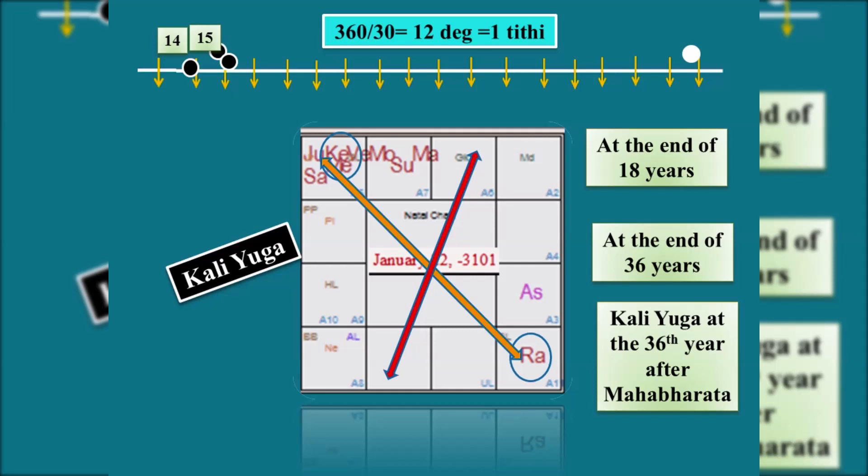Those confusions arise when the Amavasya is happening late, like this, starting from 15th to 16th. From 14th to 15th, it can happen.